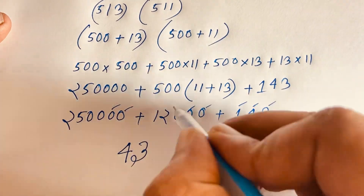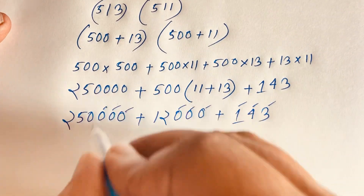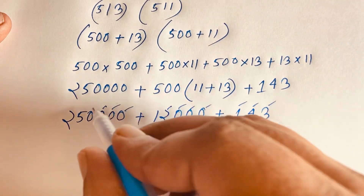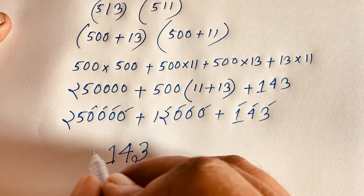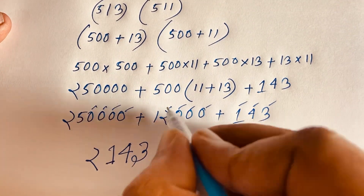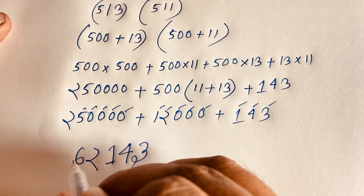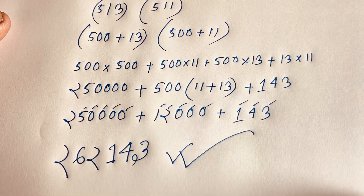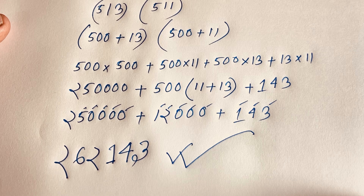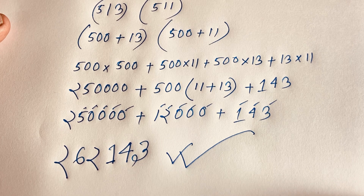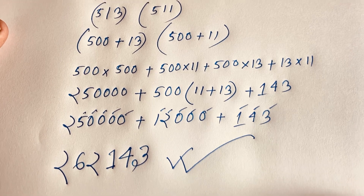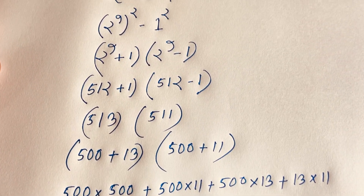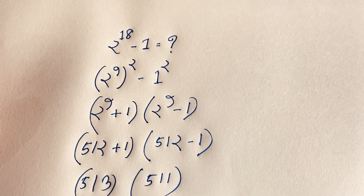Adding these up: 250,000 plus 12,000 plus 143 gives us 262,143. This is our final answer to this Math Olympiad question, solved without a calculator. Thank you all — if you enjoyed this video, please subscribe to my channel for more interesting videos. Goodbye, take care!